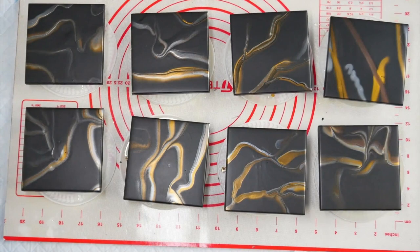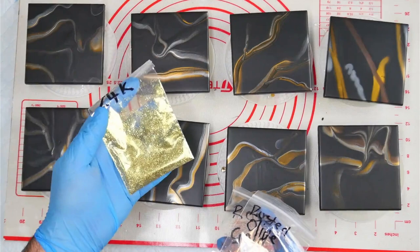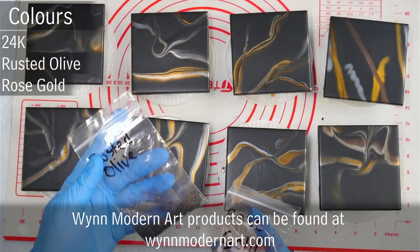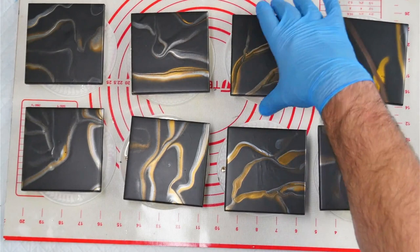So to embellish these I'm going to use some Wynn Modern Art powders and these were given to me by Helen Oakland. So thank you very much Helen as a sample to try these out. So the ones that she's given me are 24 karat, rusted olive and rose gold. So I don't know where you would find these or if that's just her abbreviated names or if they're the actual names of the powders.